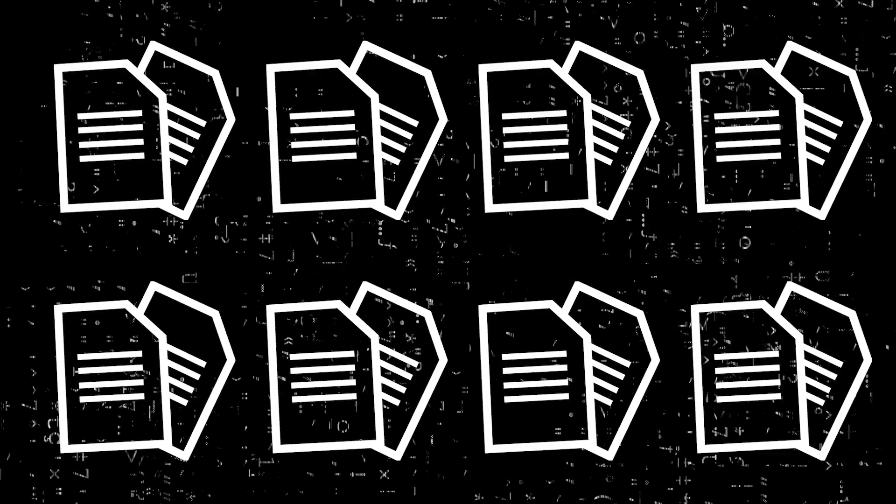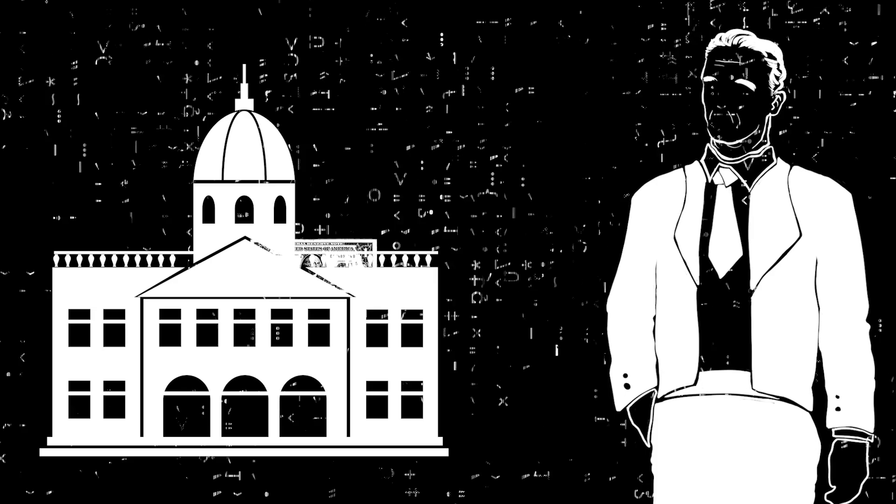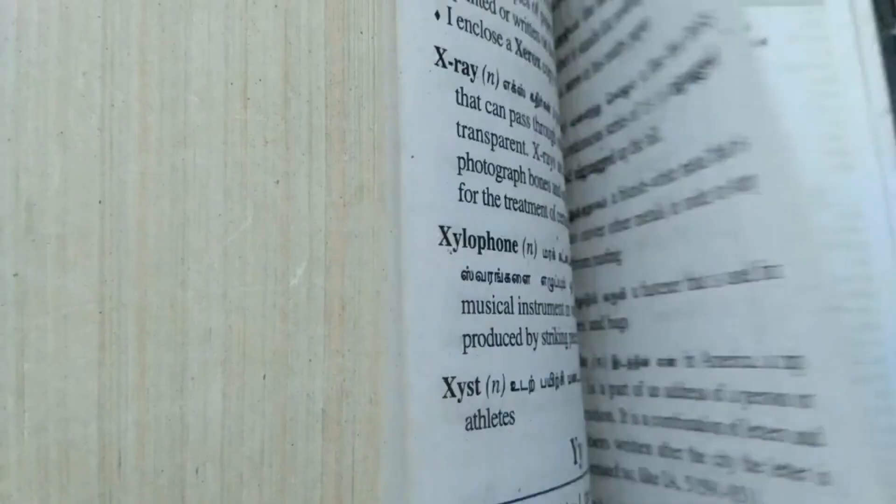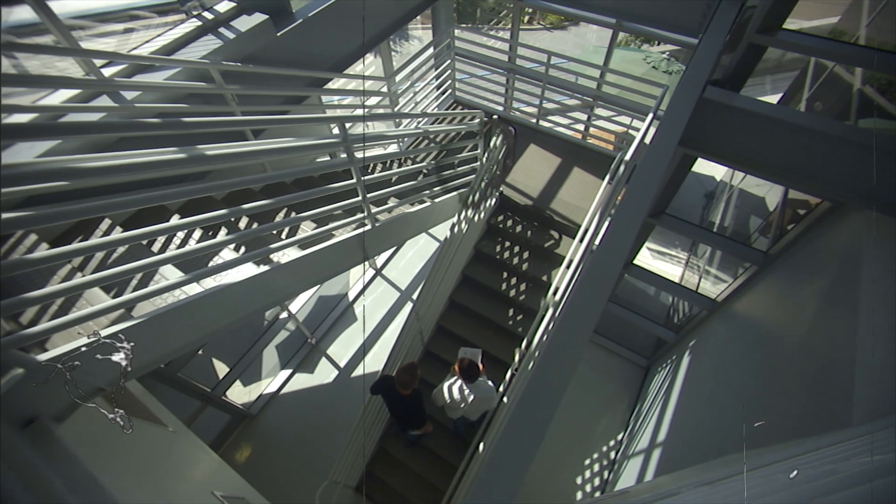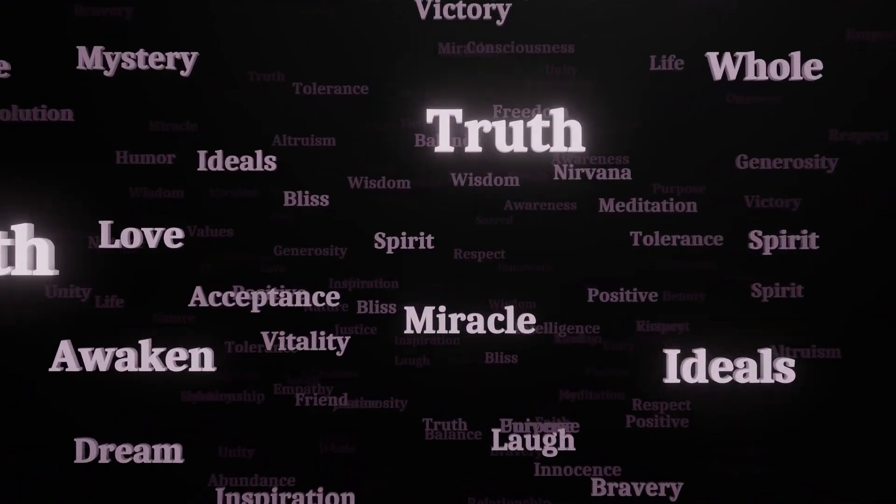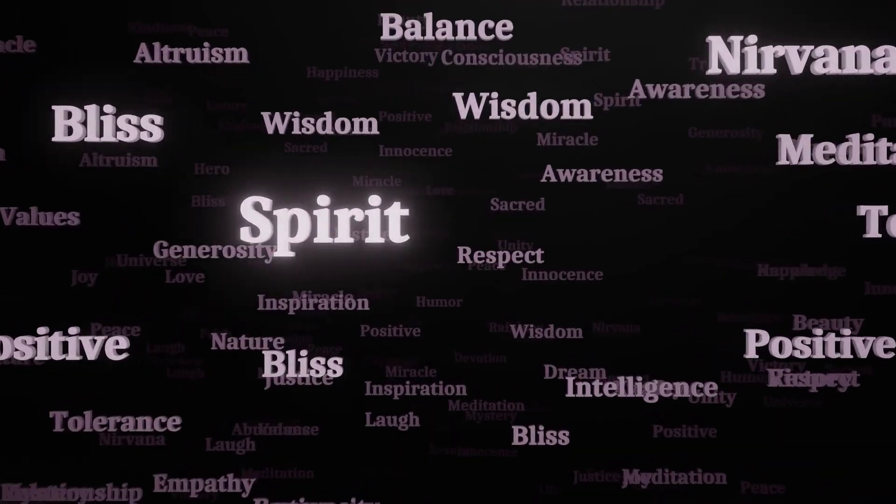Every time a new journal is made, a university has to buy a new subscription to read its contents. In other words, the more journals Maxwell creates, the more money universities will pay. There are some formal requirements for launching new journals, but Maxwell easily fulfills them with his publishing company. So the main work was really just to find new names for the journals.